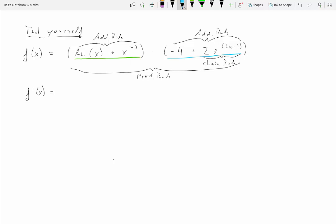So how are we going to start? So we have this green function here and the blue function. So we will first have to think about the product rule. So we will take the derivative of the green function. For which we will have to use the addition rule. So we have 1 over x minus 3x to the negative 4.